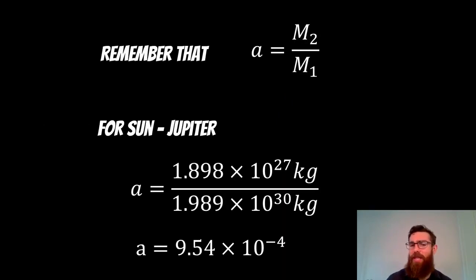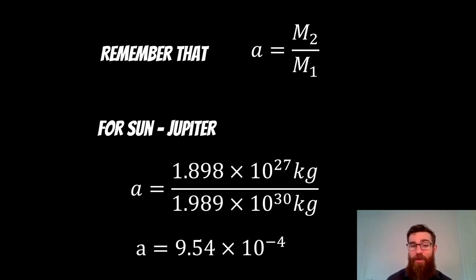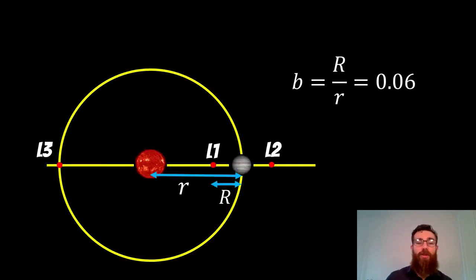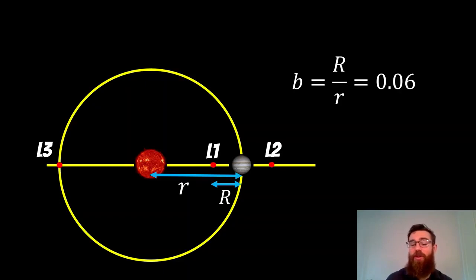Recalling that A = M2/M1, for the Sun and Jupiter example, A works out to about 9.54 × 10⁻⁴ — a fairly small number. Solving for B gives approximately 0.06. Going back to the real system, that means L1 is located about 6% of the distance between the Sun and Jupiter from Jupiter — so it sits quite close to Jupiter.